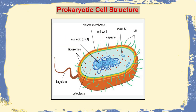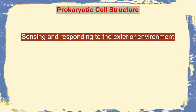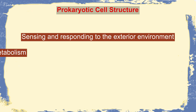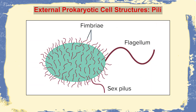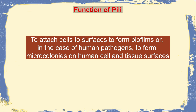Now we will discuss prokaryotic cell structure. Prokaryotic organisms exhibit a highly ordered intracellular organization, with the aims of sensing the environment and responding to external changes, compartmentalization of metabolism, and carrying out growth and reproduction. Starting with external structures — pili are protein fibers extending from the surface of the bacterial cell. They are numerous, thin proteinaceous fibers made up of proteins, onto which specific adhesive molecules called adhesins are attached.